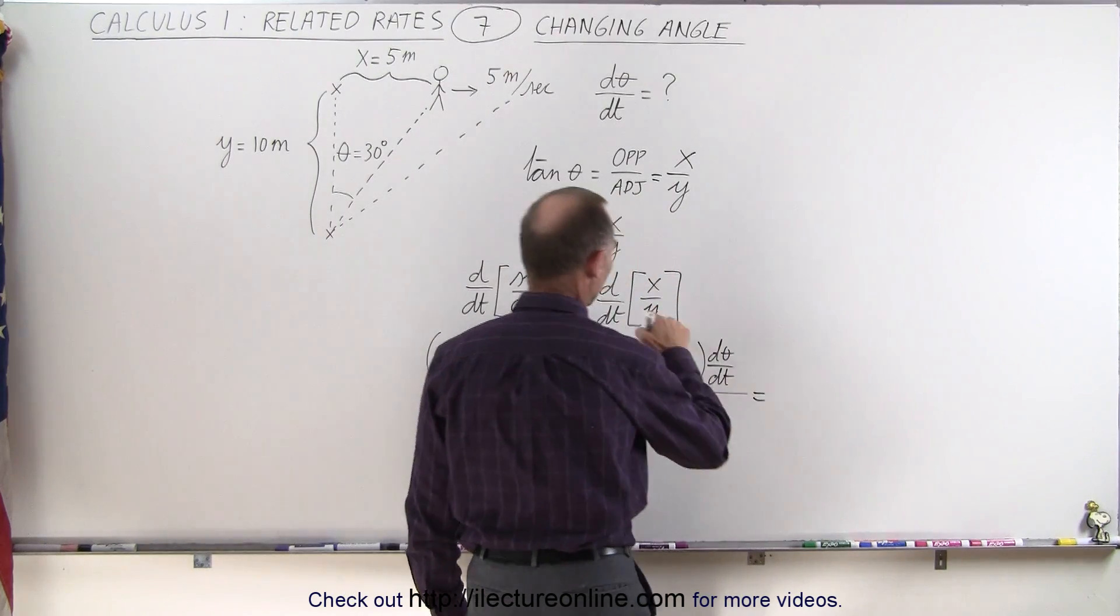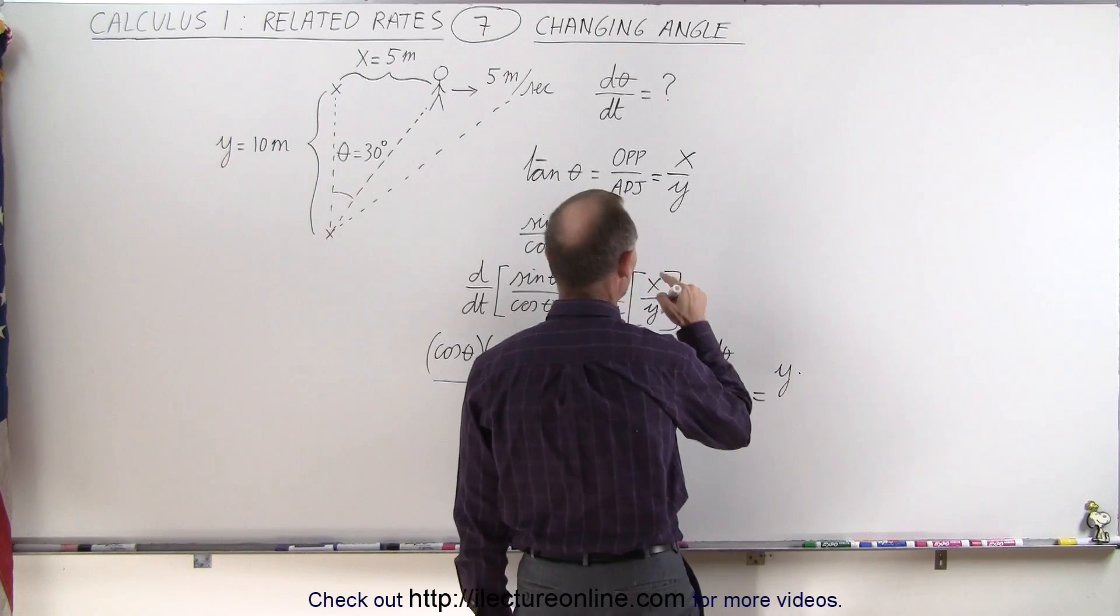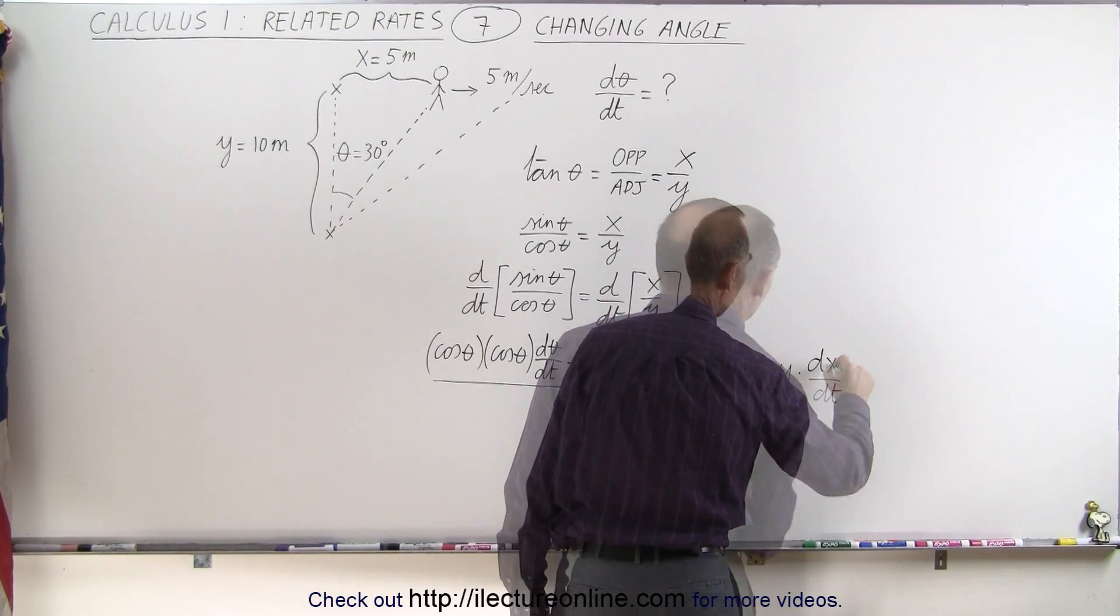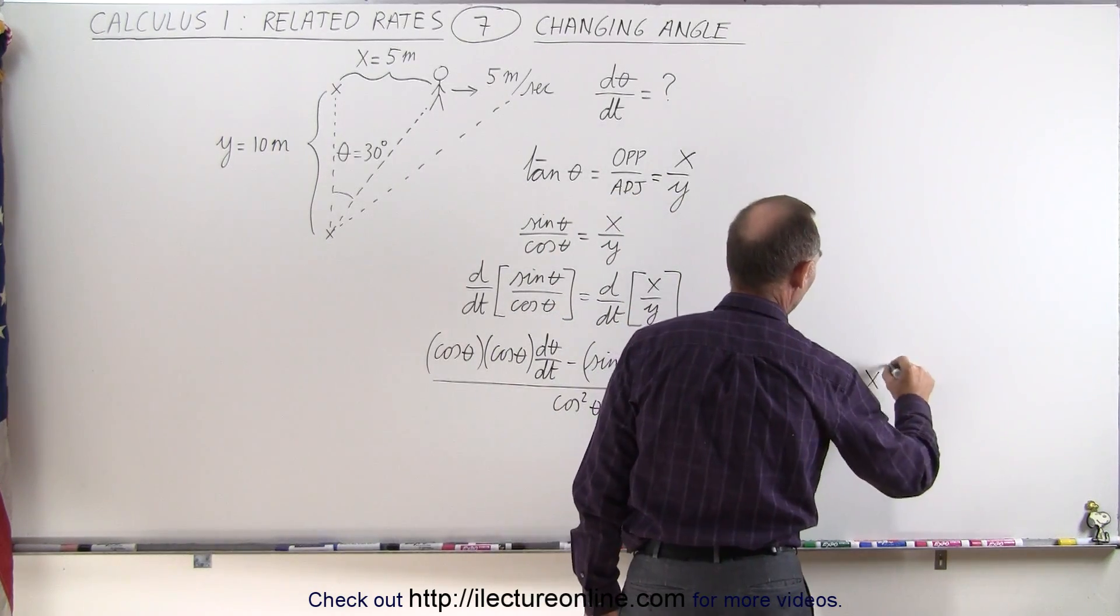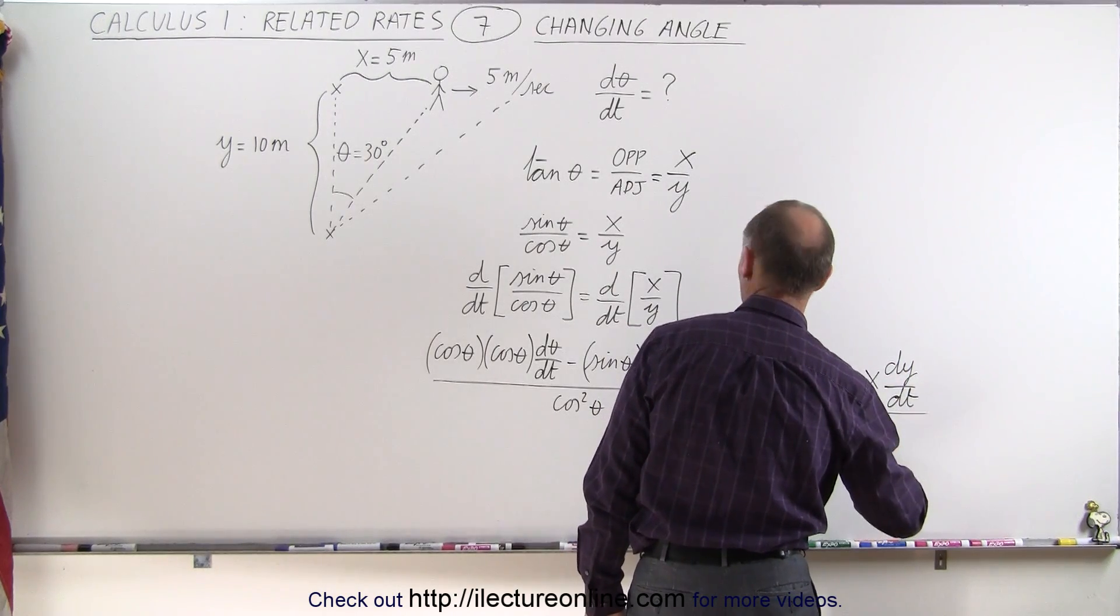And we set that equal to the derivative of the right side, which is the denominator times the derivative of the numerator, minus the numerator times the derivative of the denominator, all divided by the denominator squared.